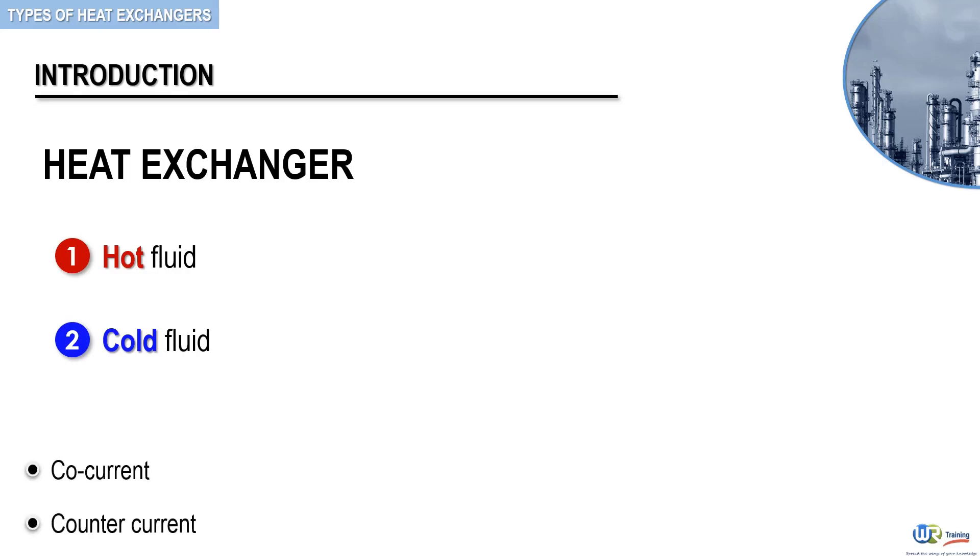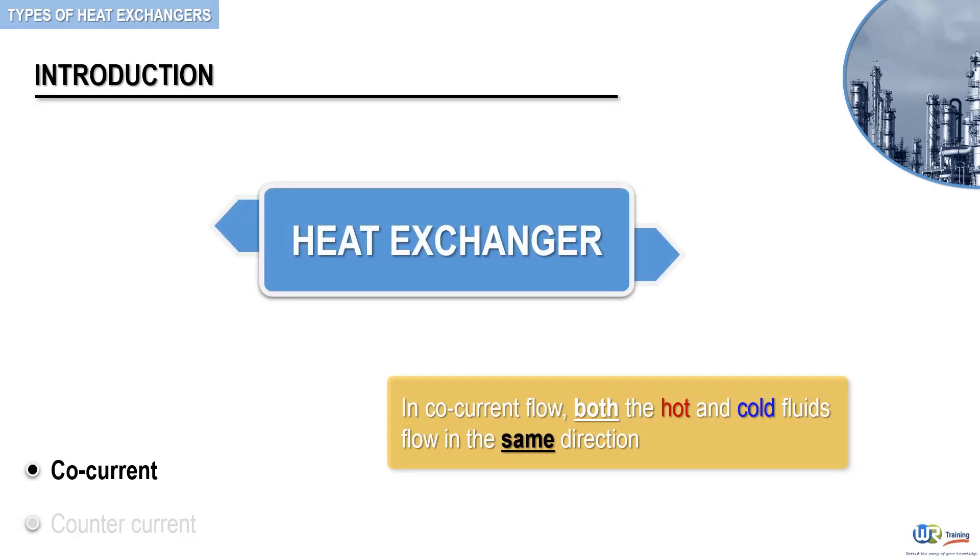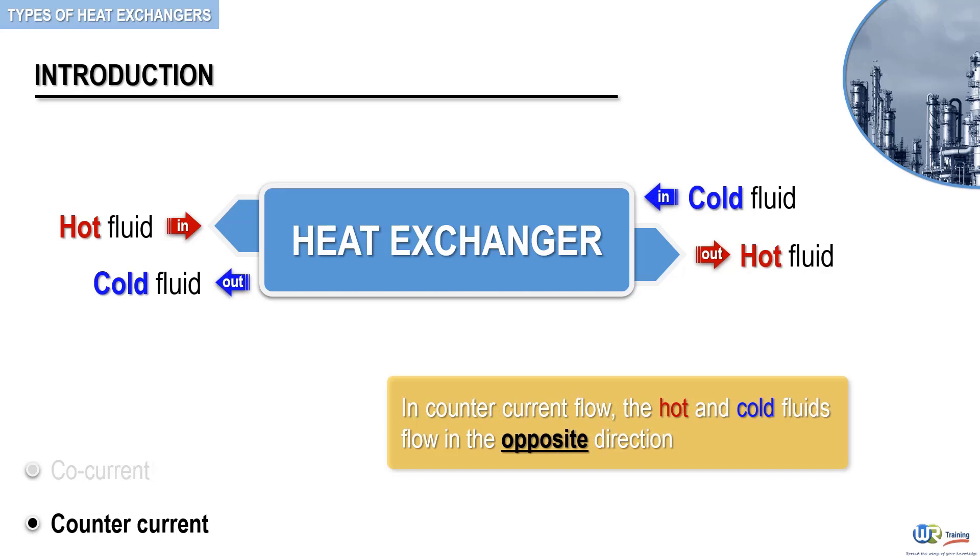In the co-current flow arrangement, both the hot and cold fluids flow in the same direction. This is depicted here in this example. In the counter-current flow arrangement, the hot and cold fluids flow in opposite directions as seen here.